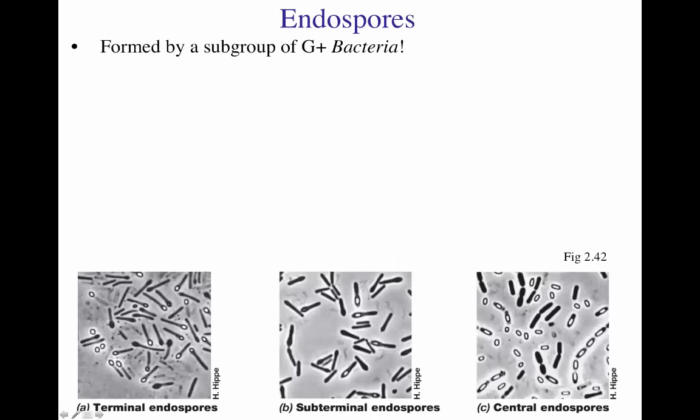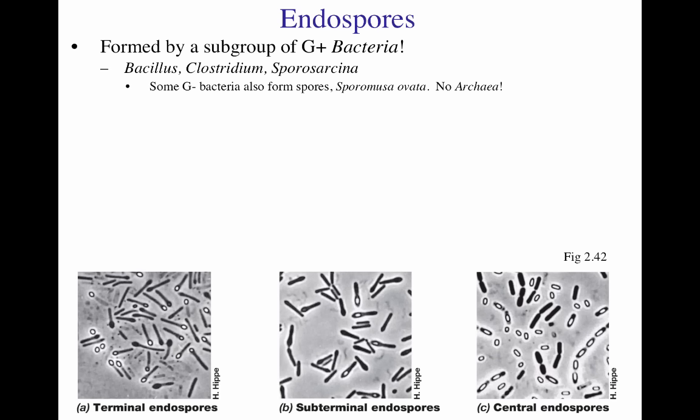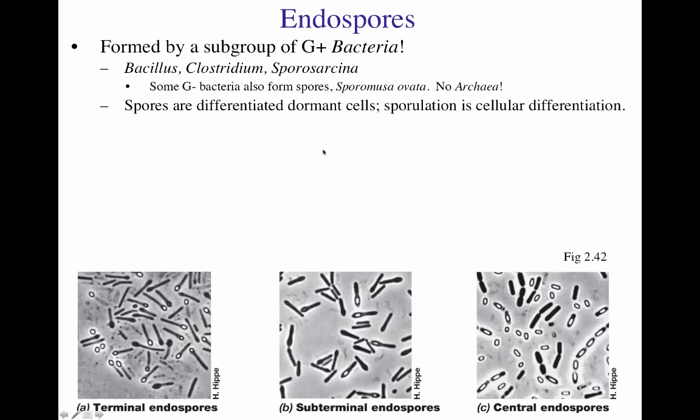Another interesting internal structure of bacteria is the endospore, mainly formed by a subgroup of gram-positive bacteria called the sporulators: Bacillus, Clostridium, and Sporosarcina. Very few gram-negative bacteria form spores; one example is Sporomusa ovata. Today we don't know of any archaea that can form spores. The spore is a differentiated dormant cell. Sporulation is a cellular differentiation event that is genetically encoded and activated. Cells growing in environments rich with nutrients do not sporulate — you can think of the spore as an escape vessel: when the going gets tough, the cell sporulates.